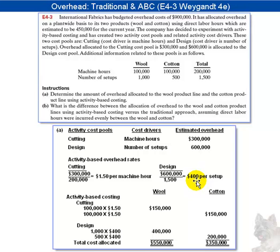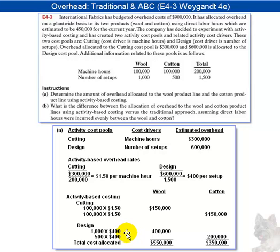Multiplying our rates by the activity usage, we calculate overhead cost for each product line. The 100,000 machine hours for each product times $1.50 allocates the cutting pool's $300,000 evenly — $150,000 each. For design, wool's 1,000 setups times $400 equals $400,000, and cotton's 500 setups times $400 equals $200,000. Summing these, total overhead allocated to wool is $550,000 and to cotton is $350,000. That is the answer to Part A.